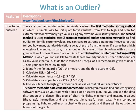The first method is the sorting method, which is a simple way to sort quantitative variables from low to high and scan for extremely low or extremely high values. Flag any extreme values that you find.